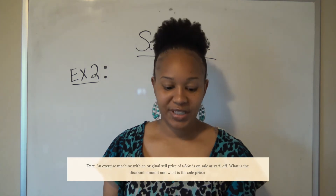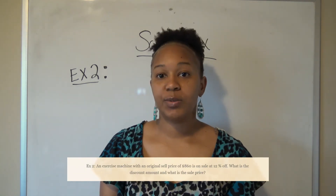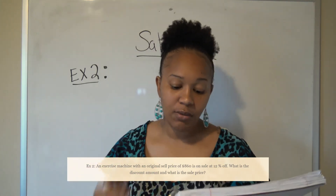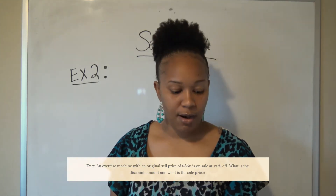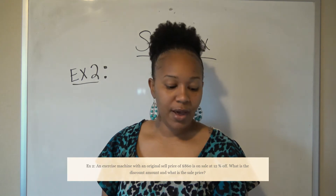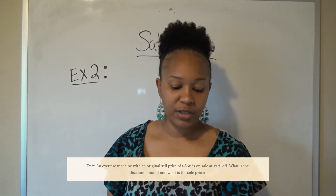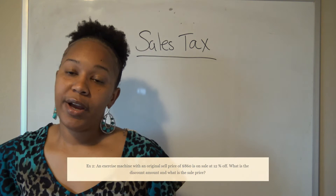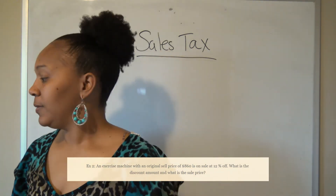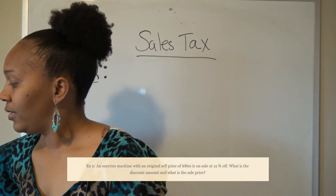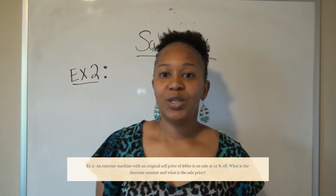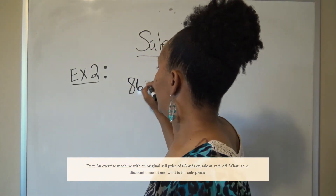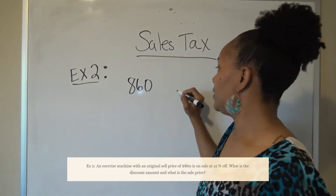Let's look at one more example. An exercise machine with an original sale price of $860 is on sale at 12% off. You want to find the discount amount and then the new sale price of the machine. The original price is $860 and it's on sale for 12% off.